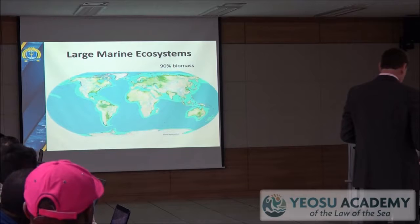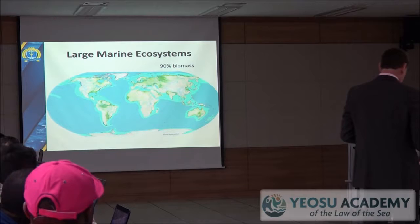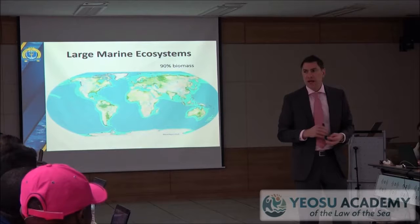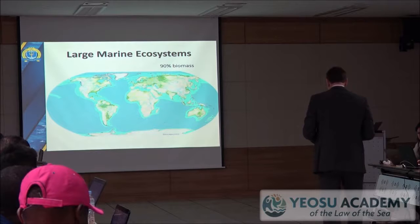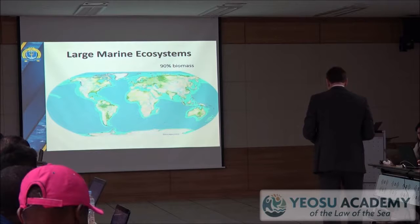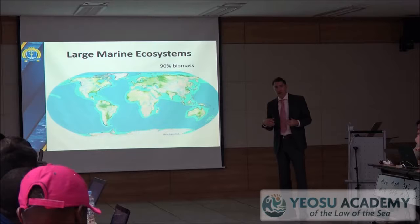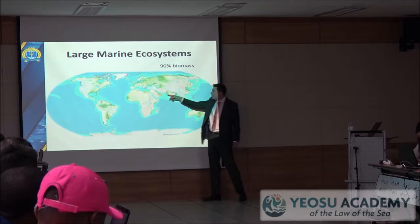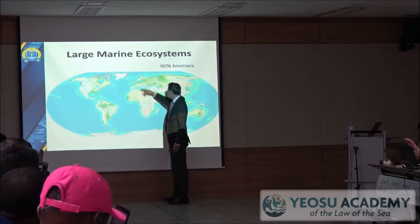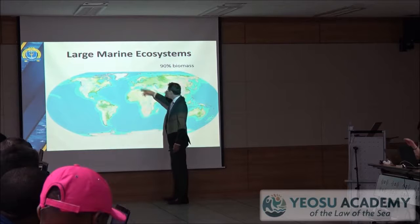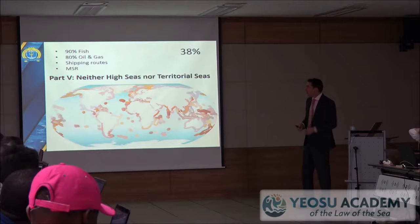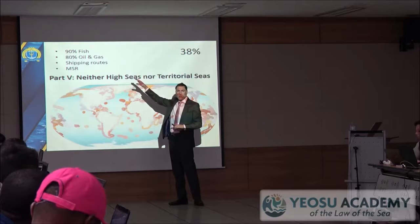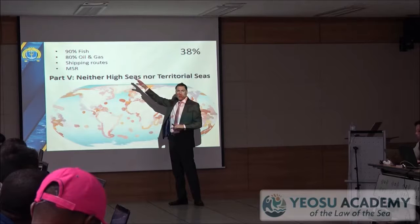Why do we care about the EEZ? As I've said many times, including in my dissertation, the EEZ is the most important area of the oceans. The principal reason is that 90% of the biomass of the oceans is contained in the large marine ecosystems that cling to the shore. This is the most productive trophic area in the world — where 90% of the ocean's biomass is, including 90% of the fish.